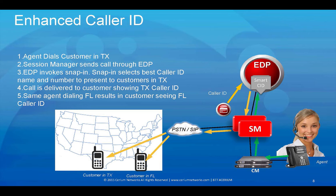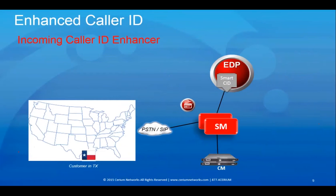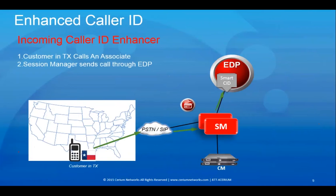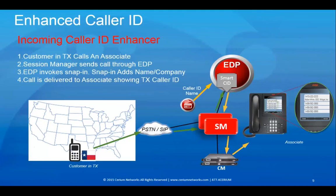When the agent dials someone in Florida, the same process repeats itself and the customer in Florida sees a Florida-based caller ID out of that call center. For the inbound example, which enhances the inbound caller ID information presented to staff: a customer in Texas calls an associate, session manager sends the call through EDP, the snap-in adds the name and company, and the call is delivered to the associate showing the Texas caller ID.